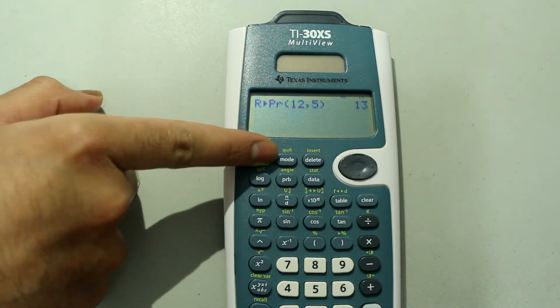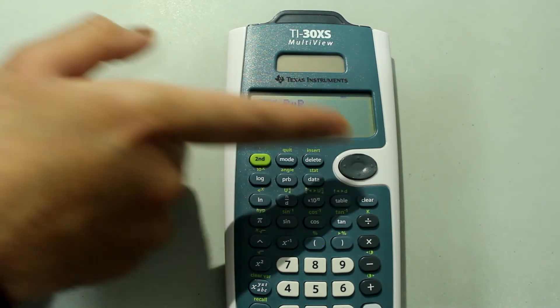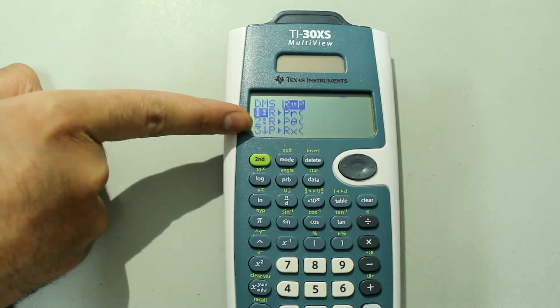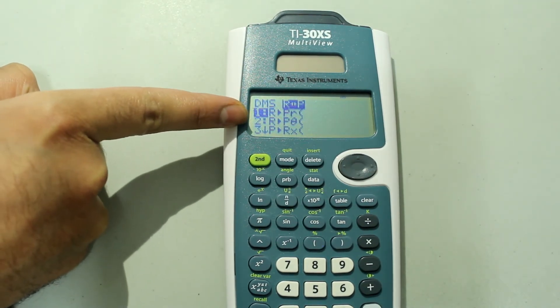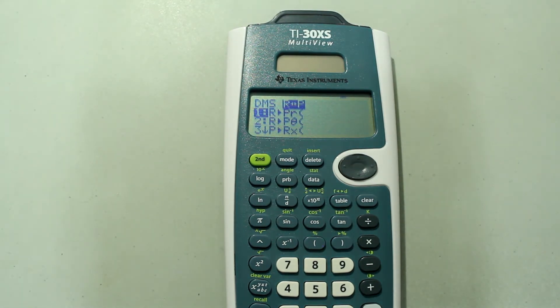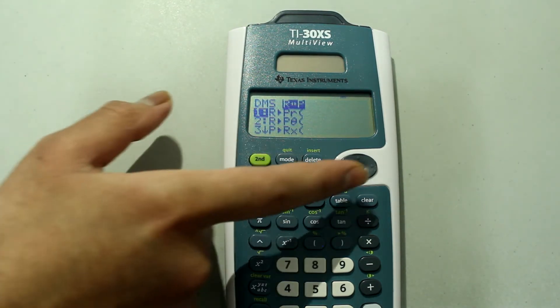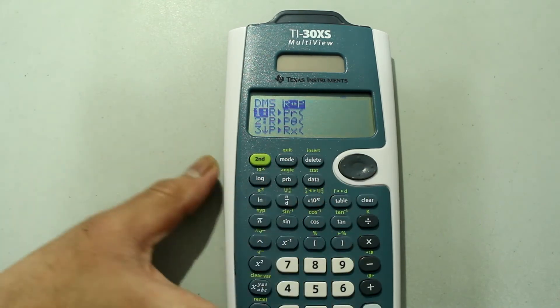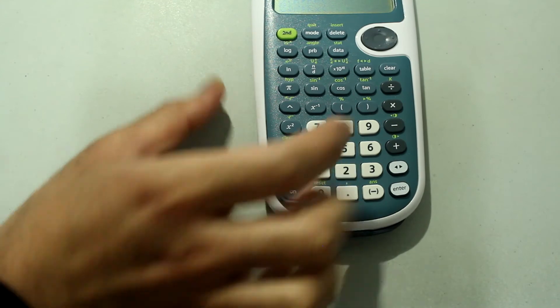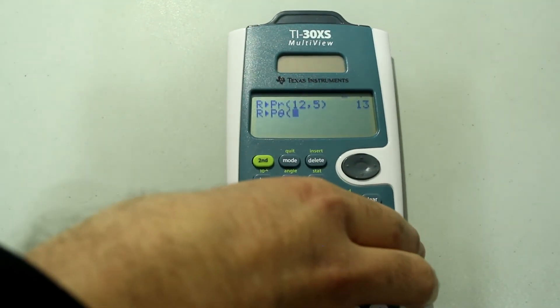Go to, press second and the PRB button one more time and arrow right. And now you're going to choose the second option. What the second option is going to do is take a rectangular input and give you the theta value of the polar form. So just, you can either arrow down and press ENTER or just simply press number 2 on the number pad. And that will select the second option in the menu for you.